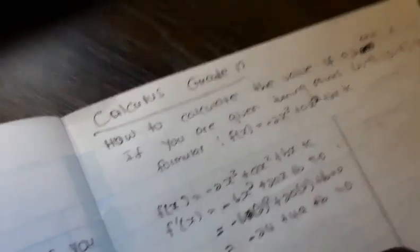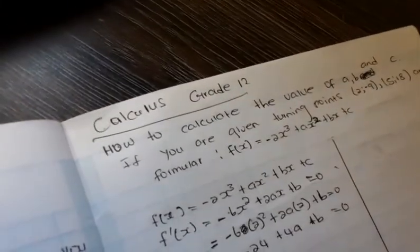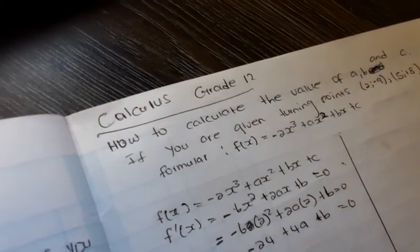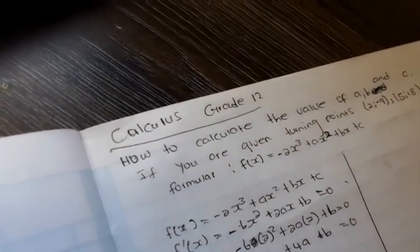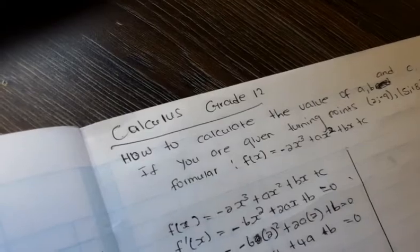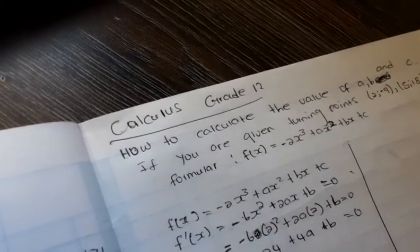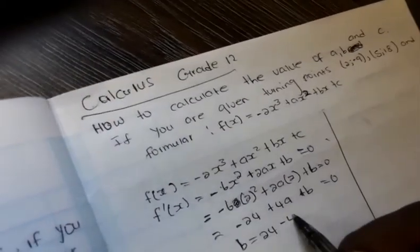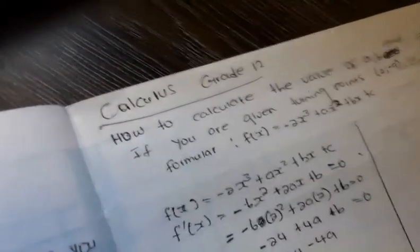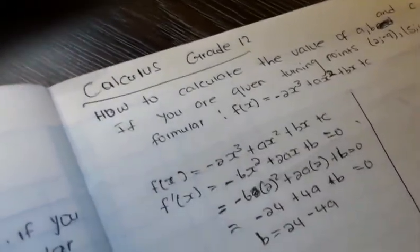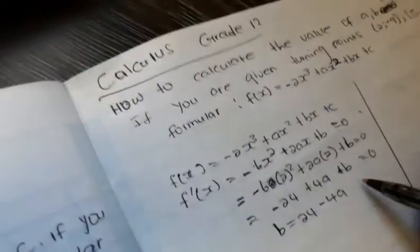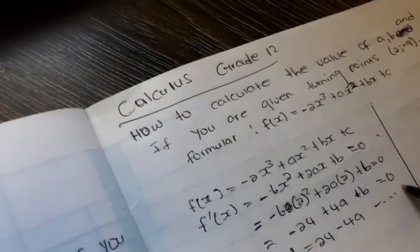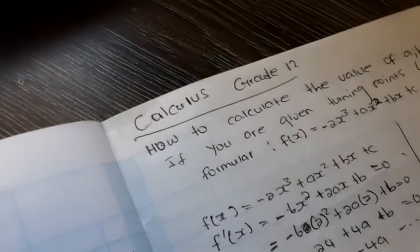From there, you will make B the subject of the formula: B = 24 - 4A. This is equation 1.